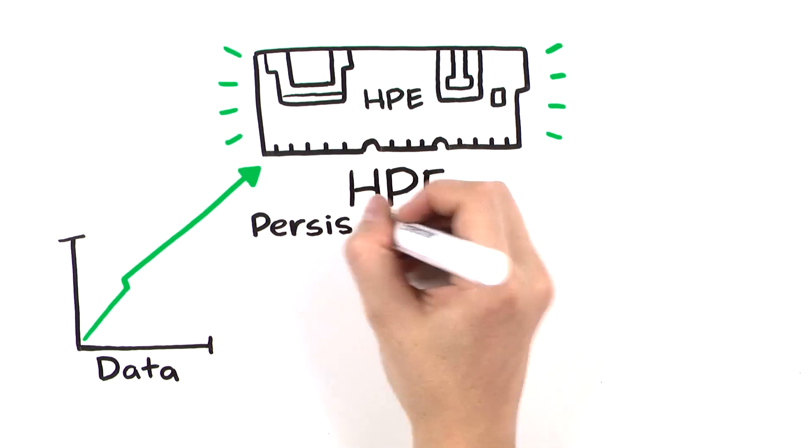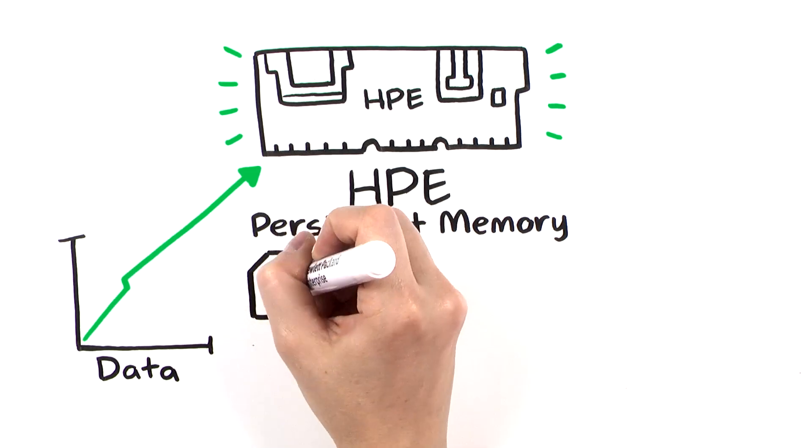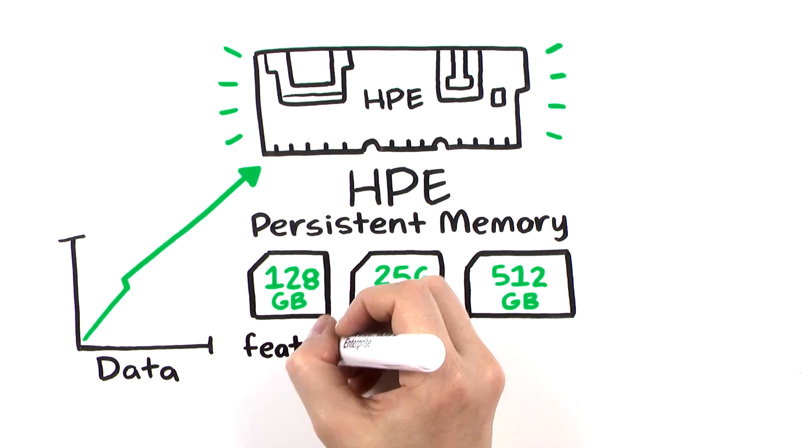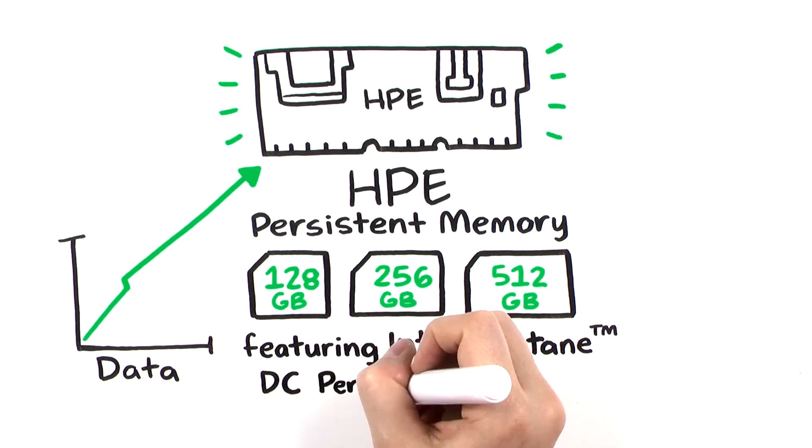New HPE persistent memory, available in 128, 256, and 512GB kits, features Intel Optane DC persistent memory.